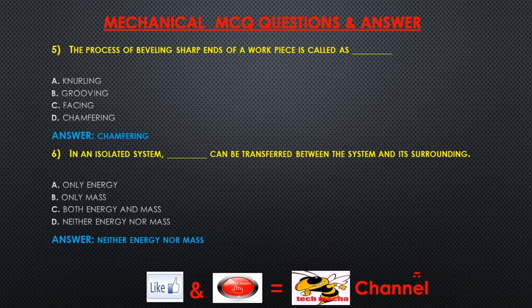Question 5: The process of beveling sharp ends of a workpiece is called — A) knurling, B) grooving, C) facing, D) chamfering. Answer: Chamfering.